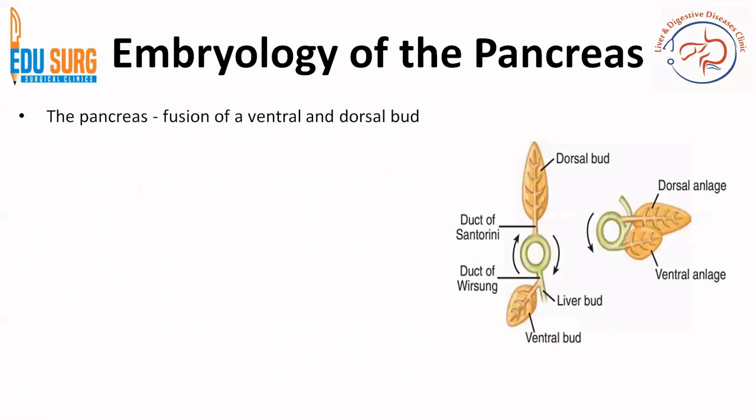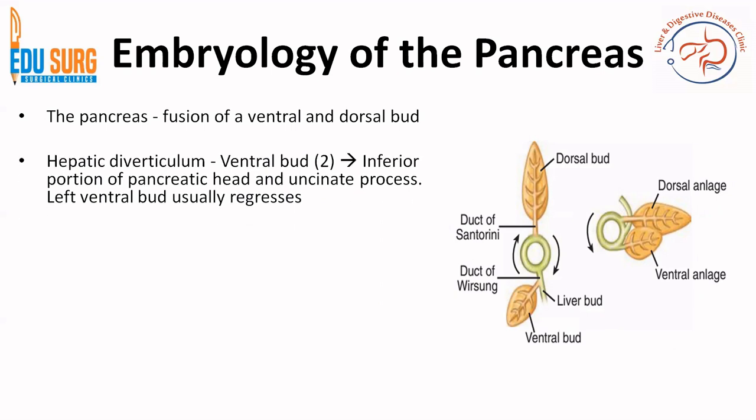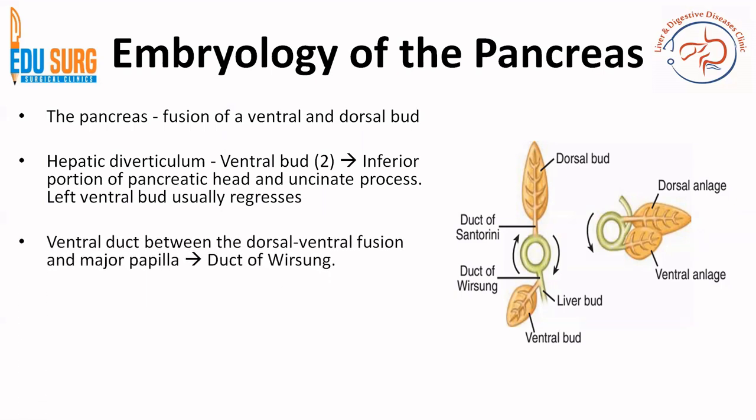The pancreas is a fusion of ventral and dorsal bud. The hepatic diverticulum gives rise to ventral buds, which are usually two in number, and they form the inferior portion of the pancreatic head and the uncinate process. As we know, the uncinate process is posterior. So that part of the pancreas which is posterior or towards the spine is formed by the ventral bud, because it rotates from right to left from behind. The left part of the ventral bud usually regresses — we will see what happens when it does not regress in the upcoming discussion on anomalies.